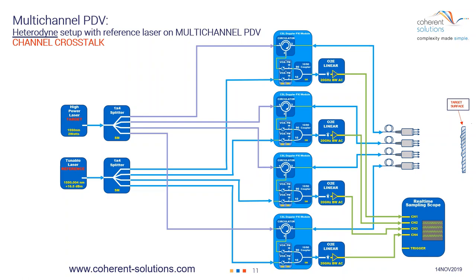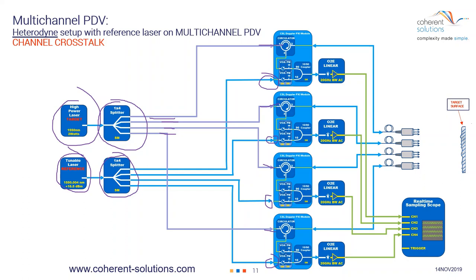Let's move on to an example where we want a multi-channel PDV setup. We've taken our target laser with the 1x4 split from the previous examples, and we're also going to take our reference laser and split it four ways. Now, each signal from the target laser goes to its own Doppler blade, and the reference laser is also supplied to each of the four Doppler blades. There are four separate Doppler blades and four separate ODE converters.